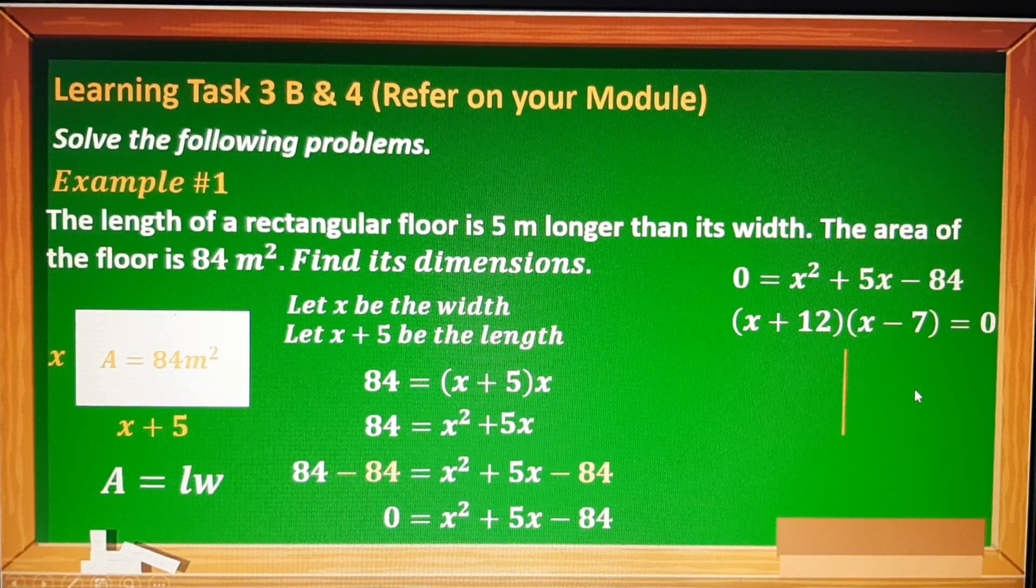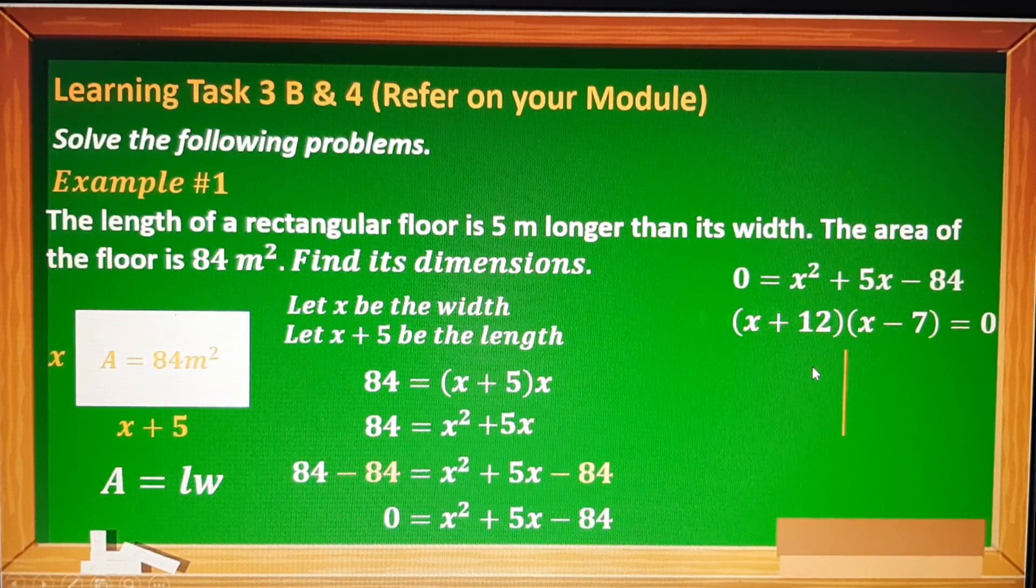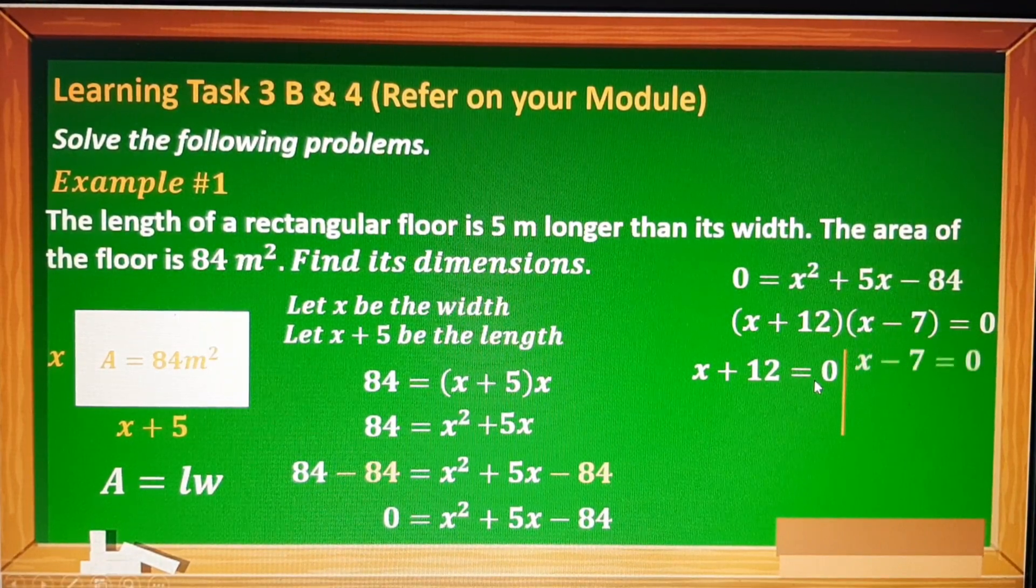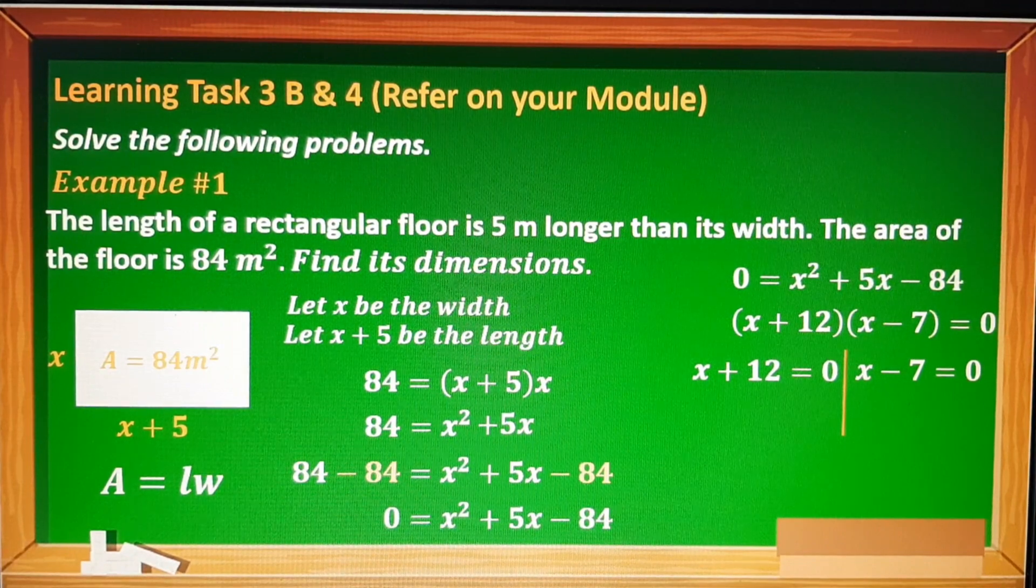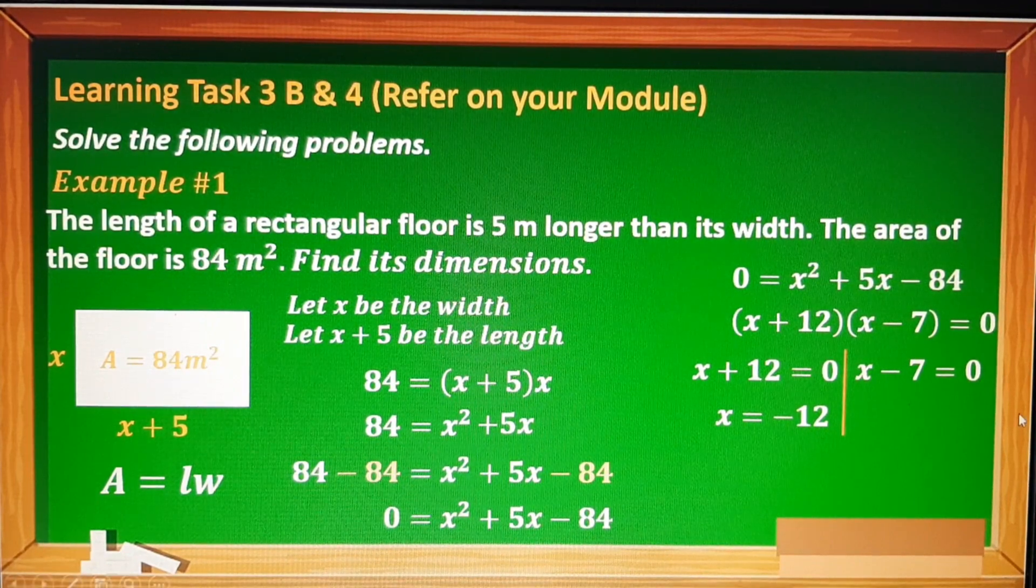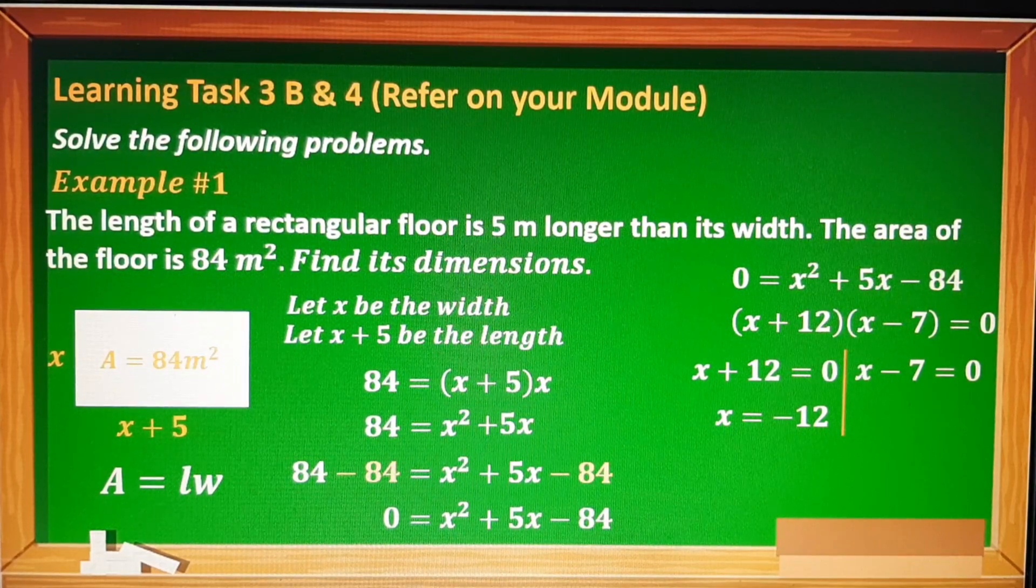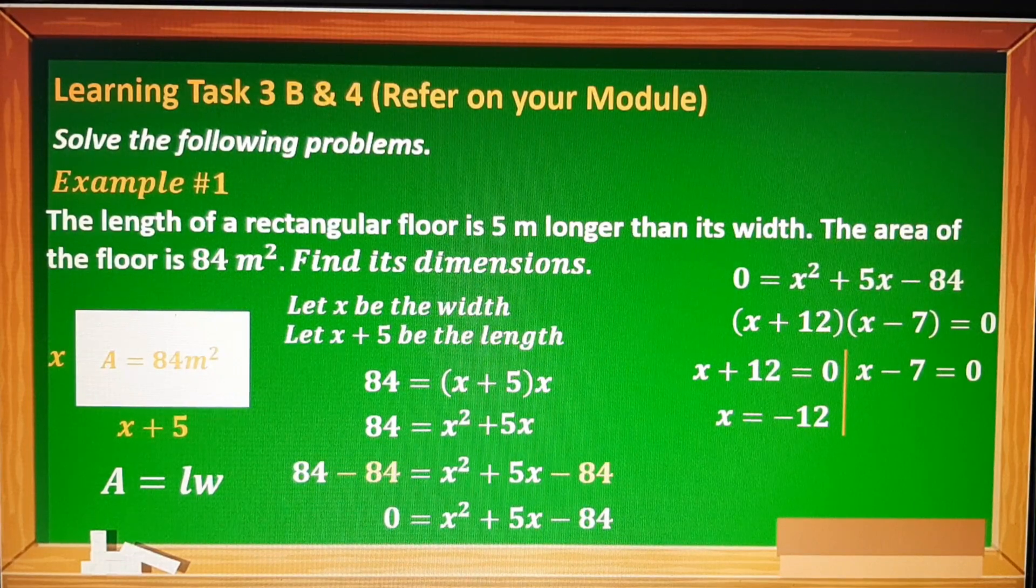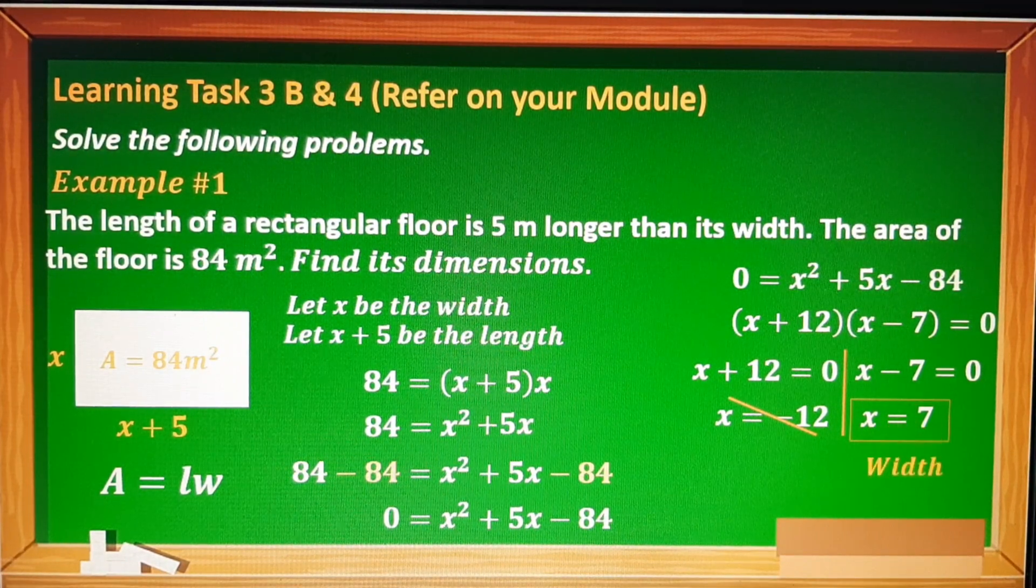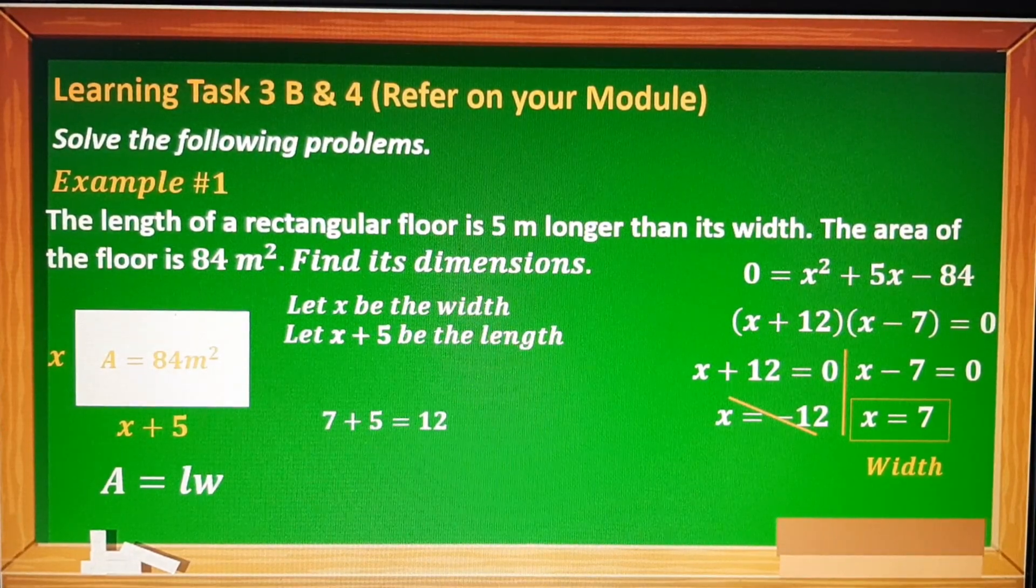And then isiseparate lang natin sila. Next, apply the zero product property as we set each factor equal to 0. First factor, we have x + 12 = 0, and the second factor is x - 7 = 0. To find the solutions or answers, we have x = -12. Since ang width natin ay x, hindi natin pwedeng gamitin ang negative 12, kaya ididisregard natin ang negative 12. Next is x = 7. Kung ang x natin ay 7, that means eto ang ating width.